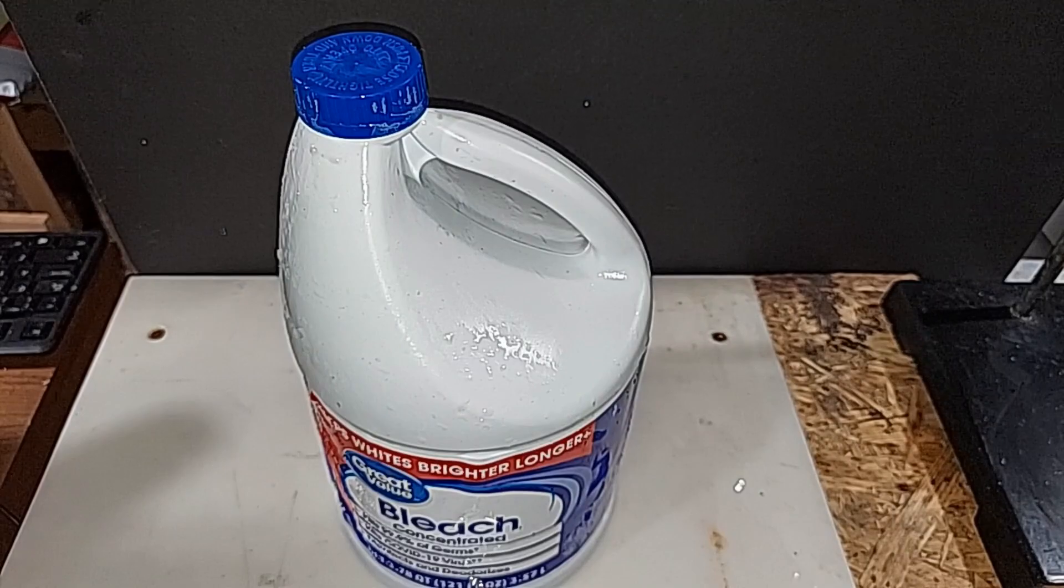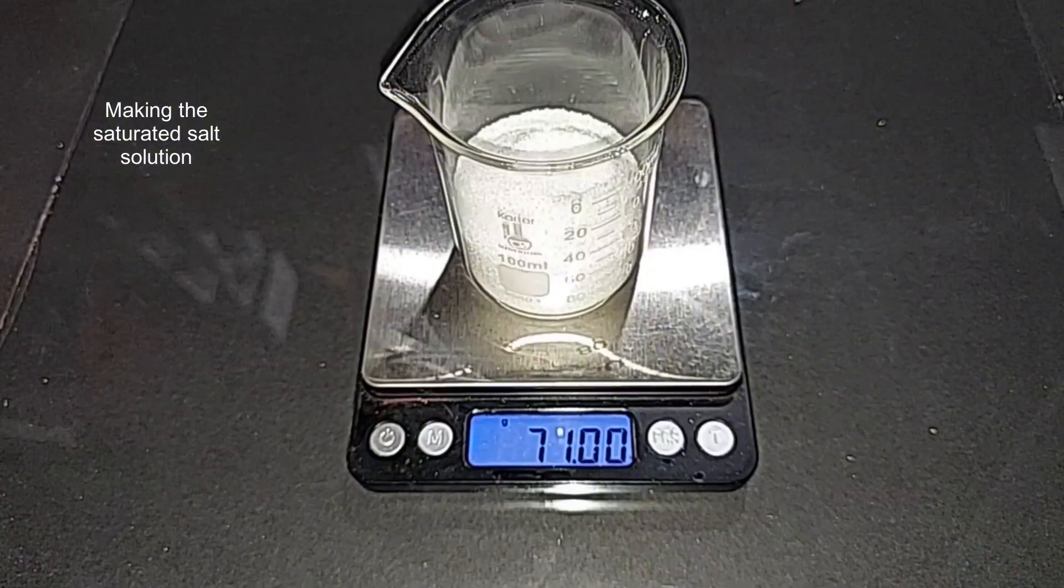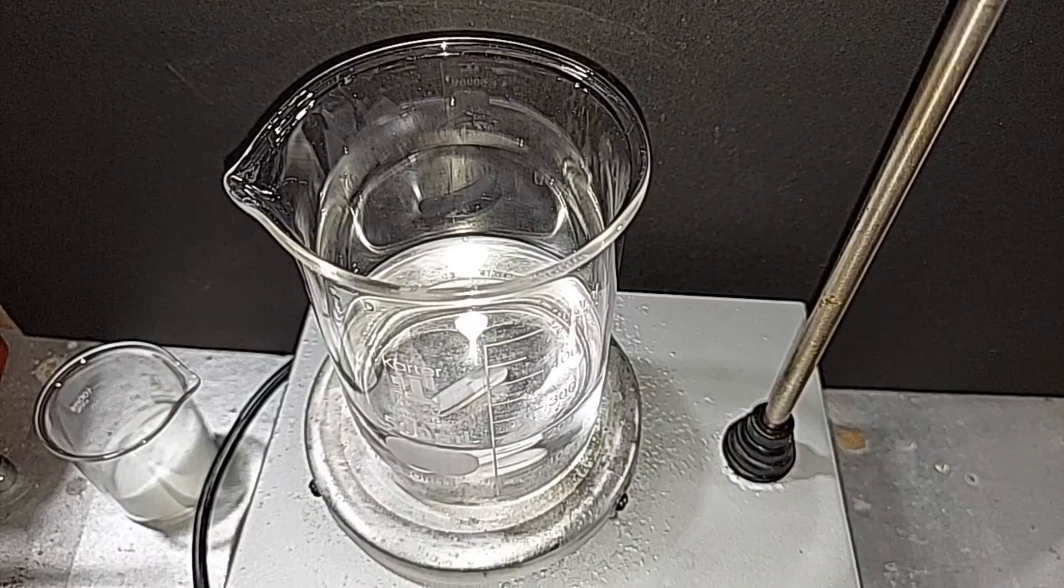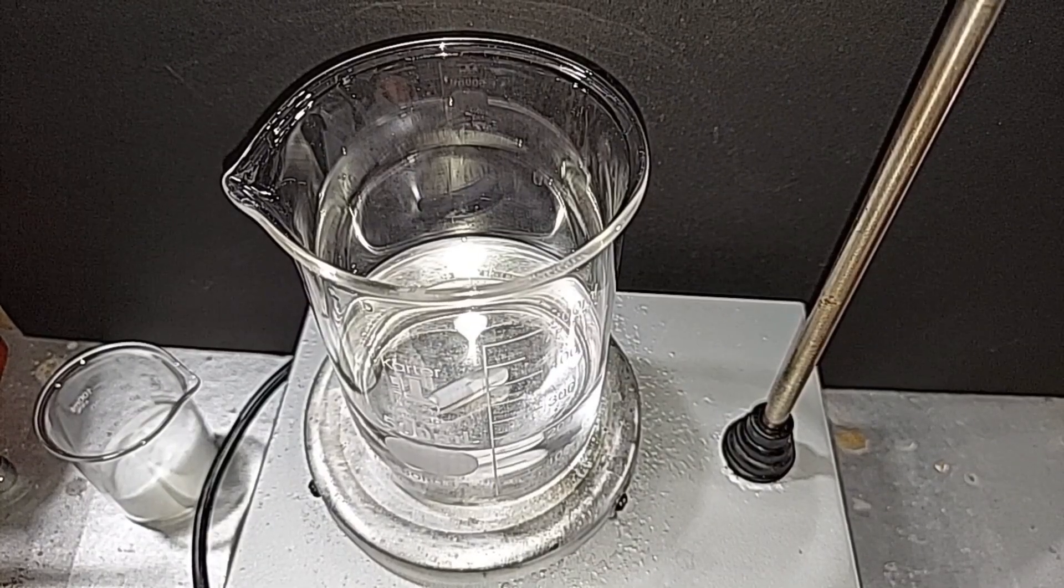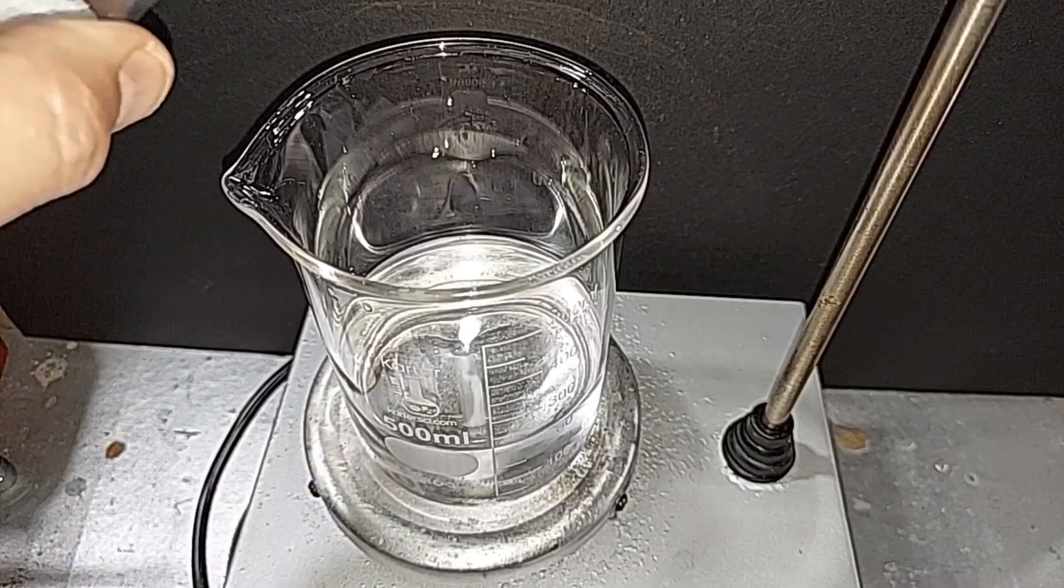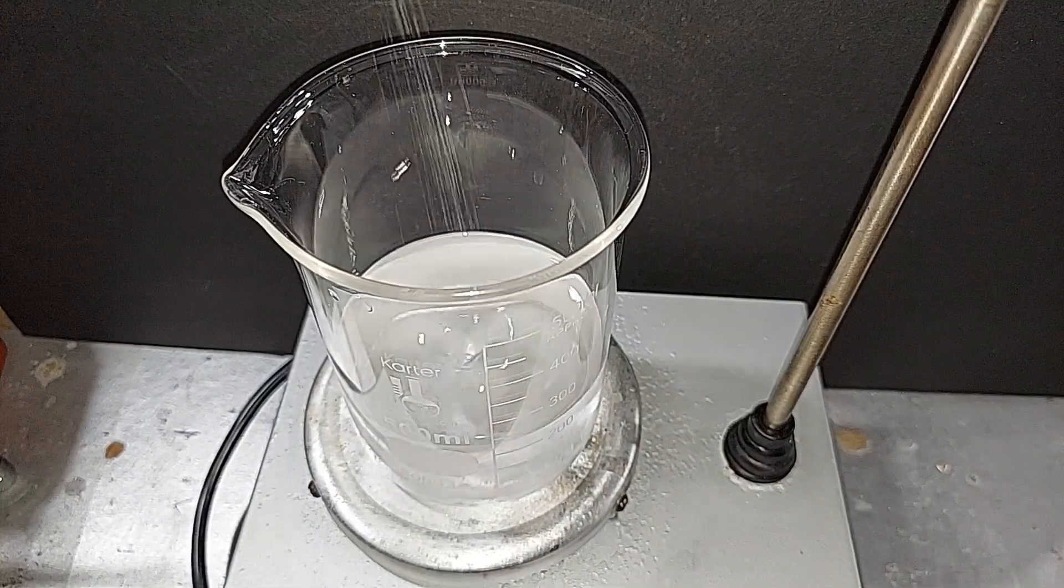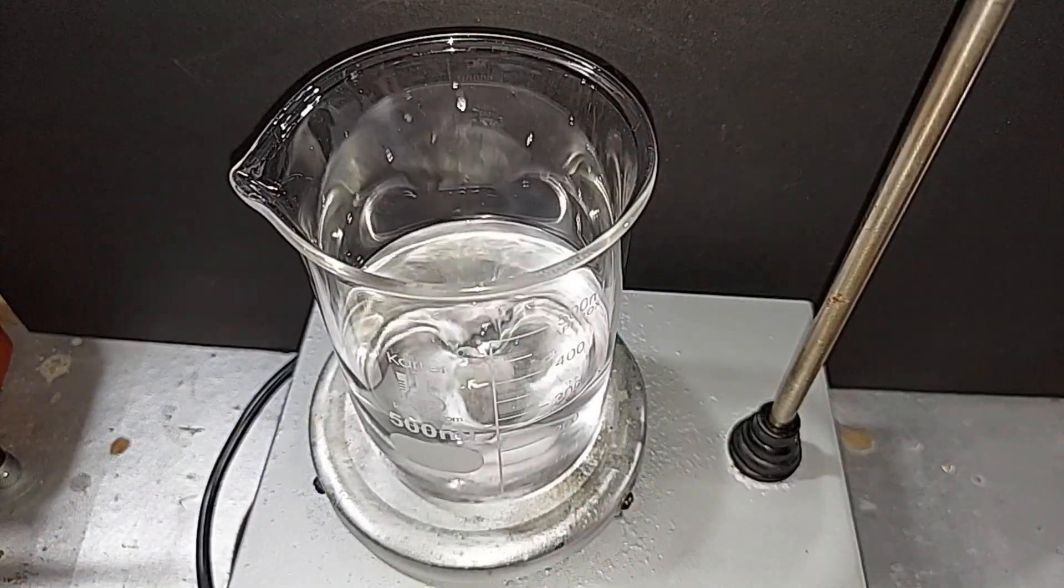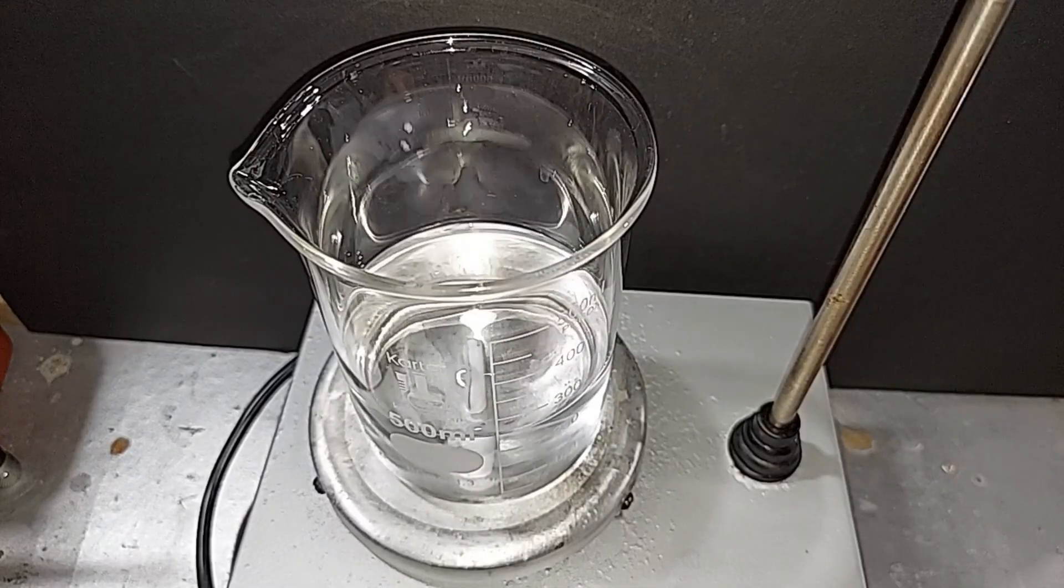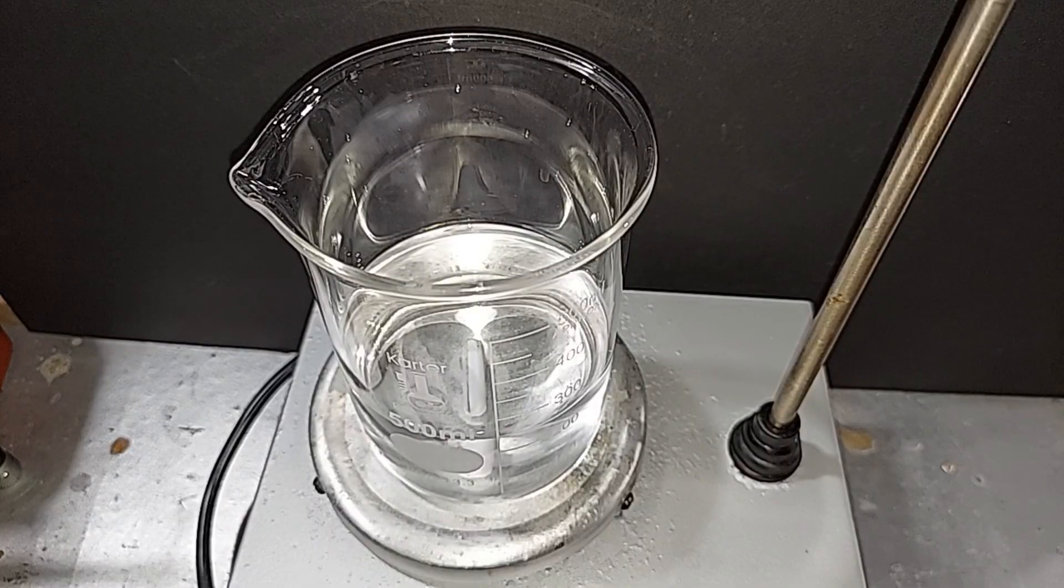200 milliliters of distilled water, pre-measured. 71 grams of iodine-free sodium chloride, pre-weighed. Here's our 200 milliliters of water. I'm going to turn on the stir bar, and we'll put in our 71 grams of salt slowly. All right, everything's dissolved. We still have to wait overnight for the reaction with the acetone and bleach to finish, but at least the salt solution is ready to go.